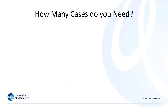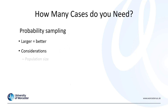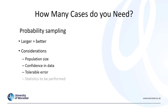So how many cases do you need? For probability sampling, larger always equals better — it increases our chance to generalize and decreases our margin of error. Considerations include the population size: if the sampling frame is bigger, ideally we want a bigger sample. It also depends on what confidence we want in the data and what tolerable amount of error we're willing to accept. The statistics to be performed will also depend on sample size, as different statistical techniques require more or less data — we'll cover this in more detail when we look at quantitative data analysis.